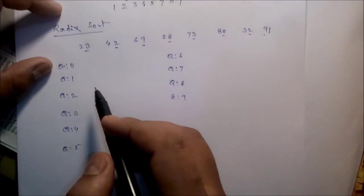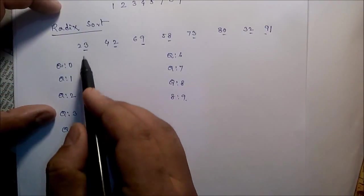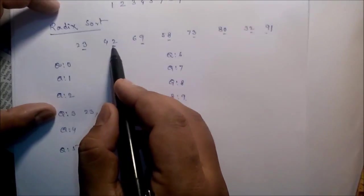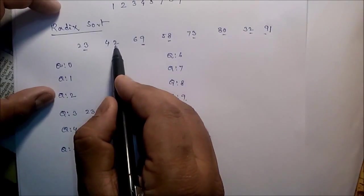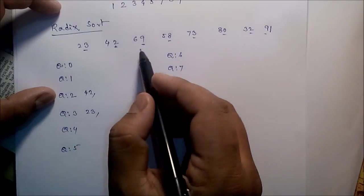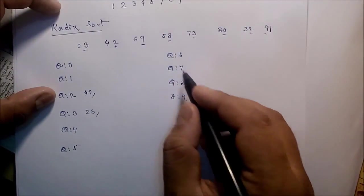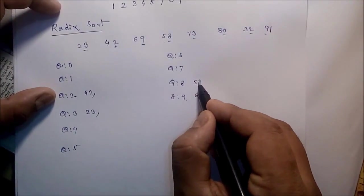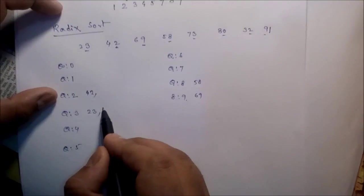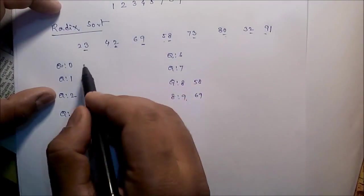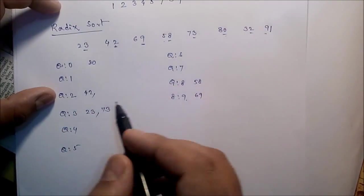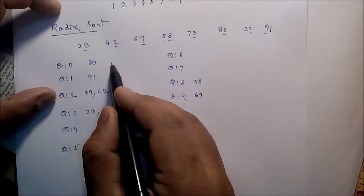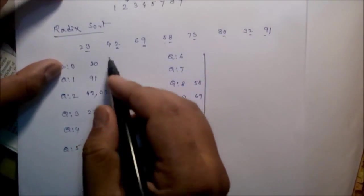We implement using queues. Now, 23, so due to this 3 you just insert in this particular queue 23. Next, 42, so due to this 2 we have to keep 42 here. 69, okay, now we can put 69 here due to this 9.